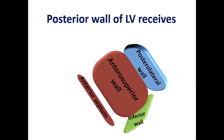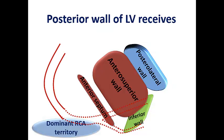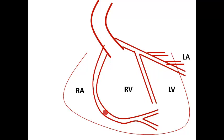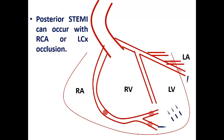What is the blood supply of the posterior wall? The right coronary artery, which is dominant in about 70% of cases, bifurcates into the posterior descending artery and the posterolateral branch, both perfusing the posterior wall of the left ventricle. When LCX is dominant in about 10%, it also supplies the posterior wall. When co-dominant, the posterior wall receives blood supply from both. A thrombus occluding the RCA, PDA, posterolateral branch, OM branches, or LCX can all result in posterior wall infarction.